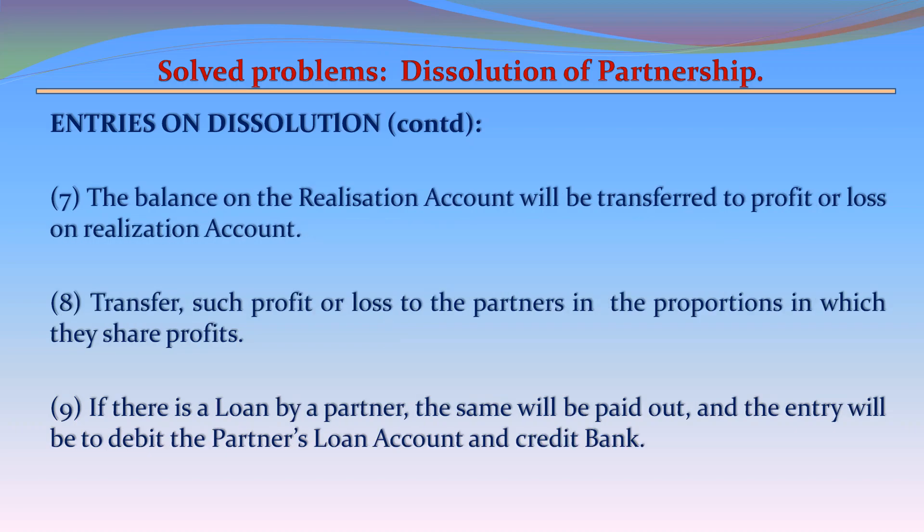Entry 7: The balance on the Realization Account will be transferred as profit or loss on realization. Entry 8: Transfer such profit or loss to the partners in the proportions in which they share profits. Entry 9: If there is a loan by a partner, the same will be paid out, and the entry will be to debit the partner's Loan Account and credit Bank.